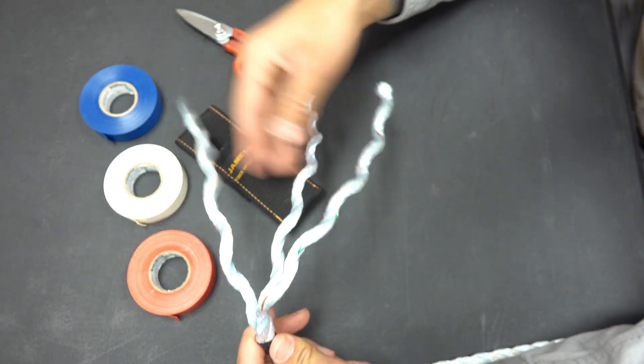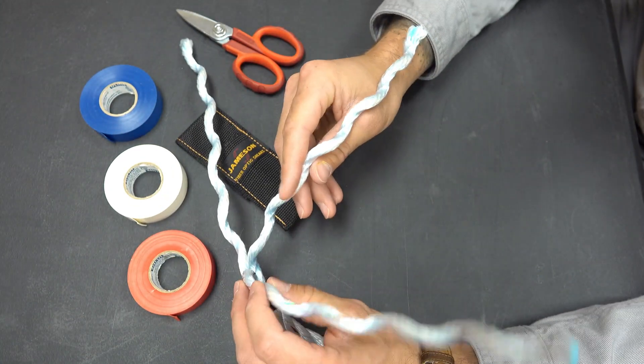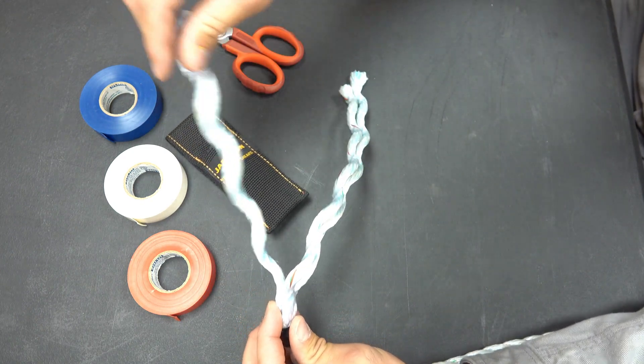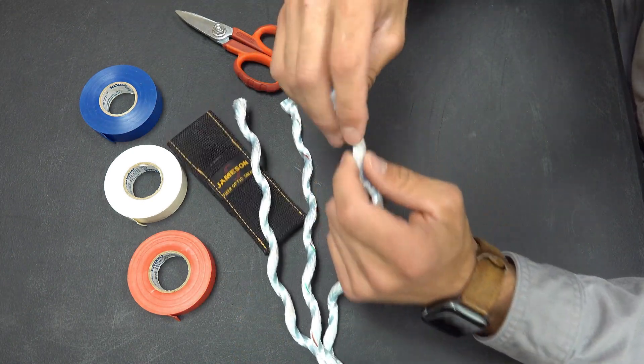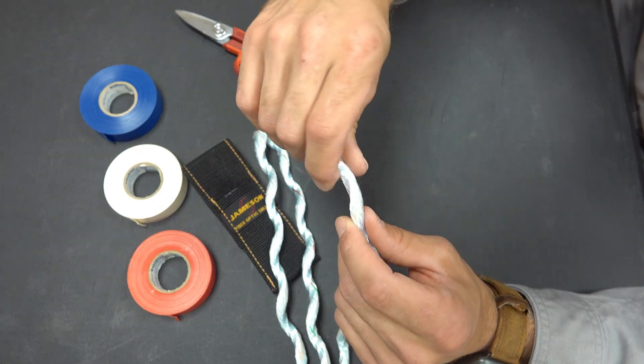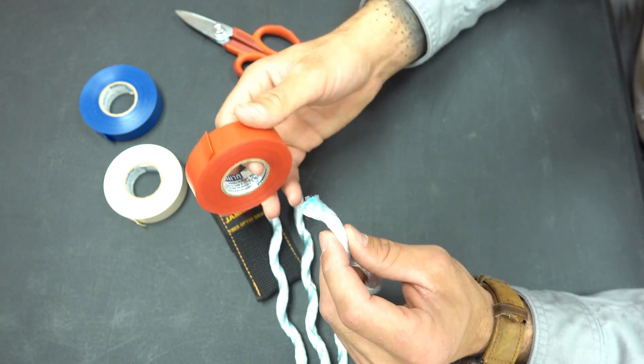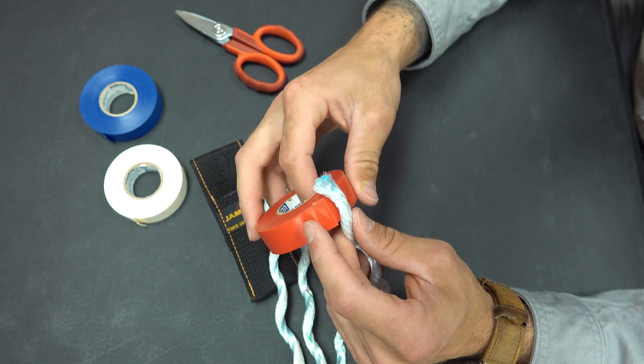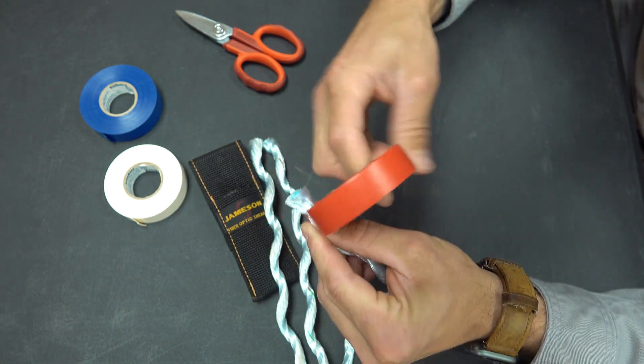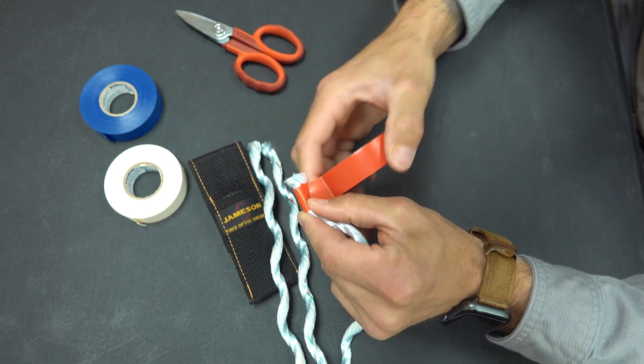So here we are. This is our three strand rope. Before the ends of our rope get messed up, we're going to take some colored tape, starting with red, and I'm going to wrap the ends of this rope with the tape.